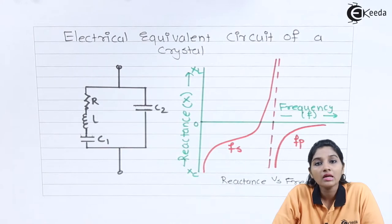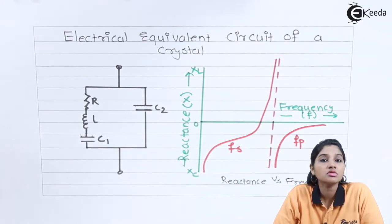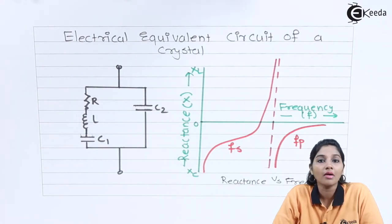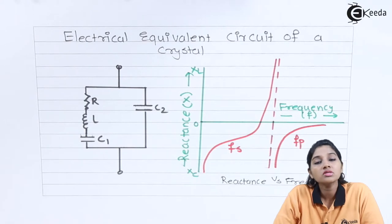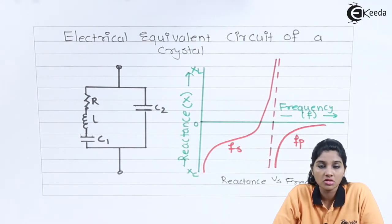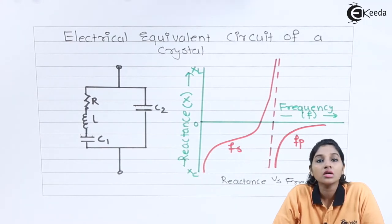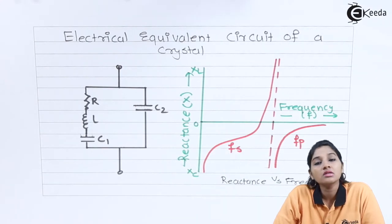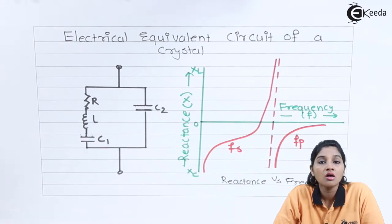Whereas if mechanical vibrations are applied across a crystal, then it produces an AC signal at the output and the frequency of the AC signal is similar to the applied vibrations. The frequency at which the maximum vibrations can be produced by the crystal oscillator is called the resonant frequency. Now let's see how the electrical equivalent circuit of a crystal oscillator looks like. Basically the crystal oscillator is nothing but a tuned circuit and it uses piezoelectric effect for the resonant tank circuit.